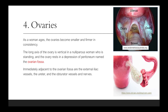As the woman ages, the ovaries become smaller or atrophic and firmer in consistency. The long axis of the ovary is vertical in a nulliparous woman who is standing, and the ovary rests in a depression of peritoneum called the ovarian fossa. Immediately adjacent to the ovarian fossa are the external iliac vessels, the ureter, and the obturator vessels and nerves.